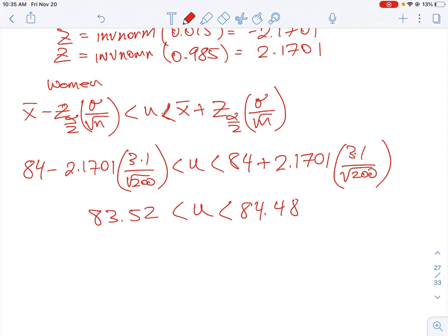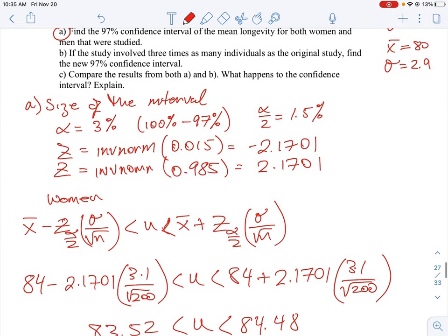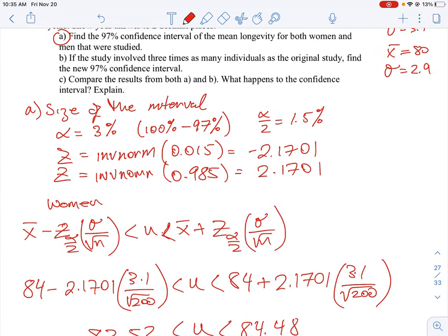And then in part B of the question, what they end up doing is they talk about changing. If the study involves three times as many individuals as the original study, find the new confidence interval. So if they're just saying three times as many individuals, so that means you just multiply by three. That's going to give us our new value for N, a new N value.